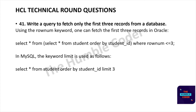The next question is: write a query to fetch only the first three records from a database. In Oracle, using row number: SELECT * FROM (SELECT * FROM student ORDER BY studentID) WHERE rownum <= 3. In MySQL, the LIMIT keyword is used: SELECT * FROM students ORDER BY studentID LIMIT 3.